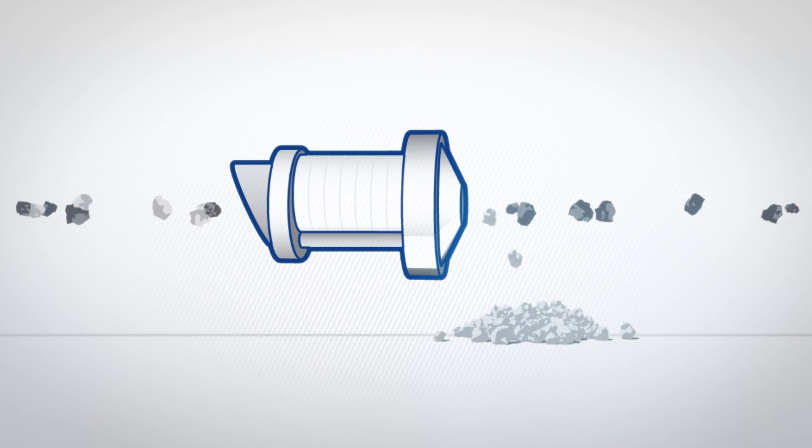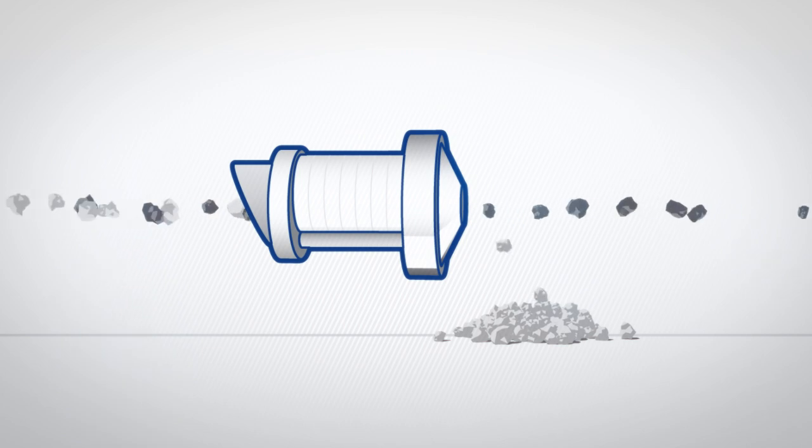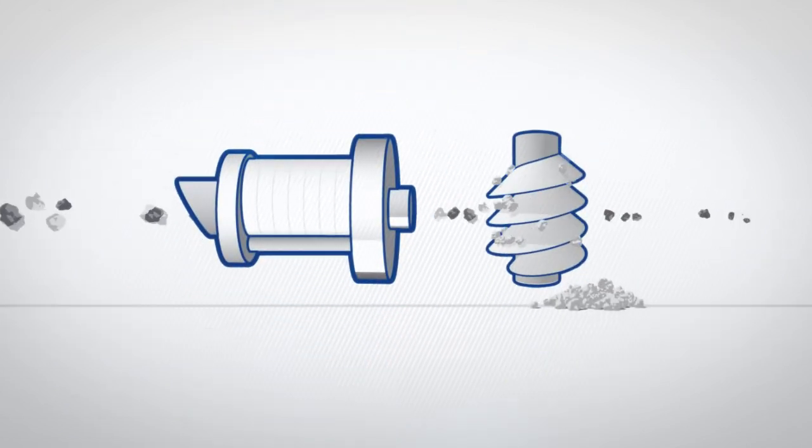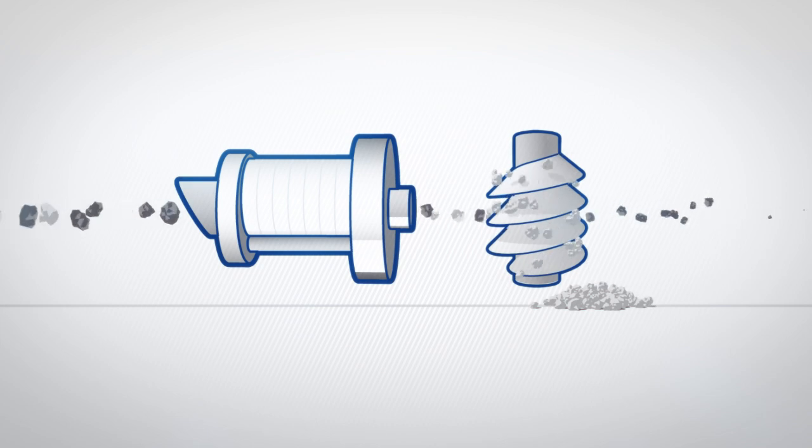In this process, ore pieces with the highest specific weight are separated from the rest of the ore feed. The next stage is the fine concentrate plant, where the crushed ore is ground smaller in the rod mill and then concentrated by gravity separation.